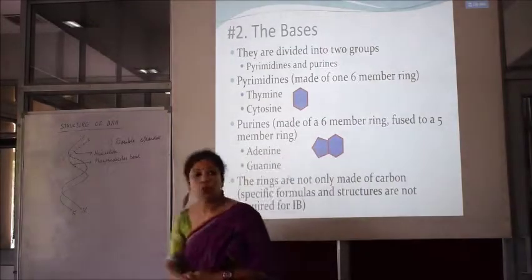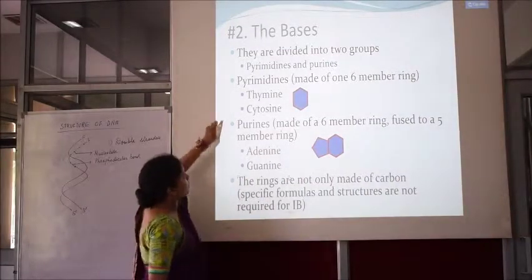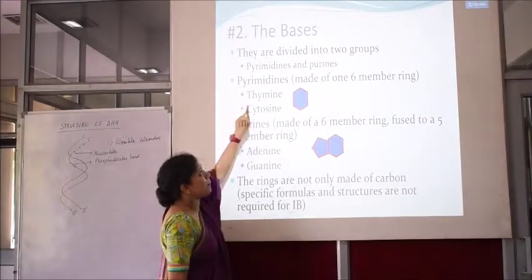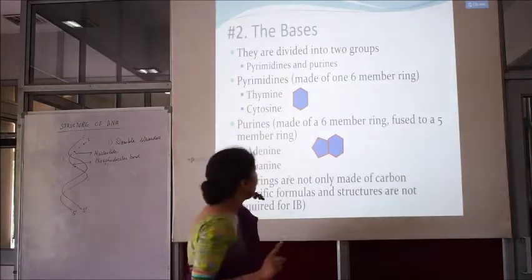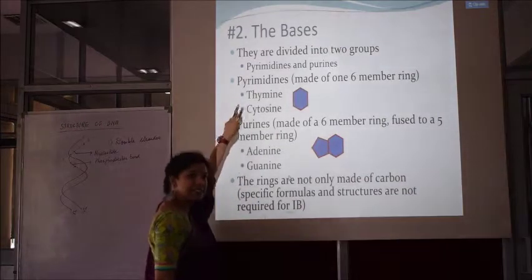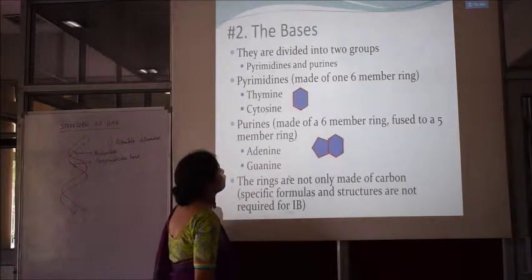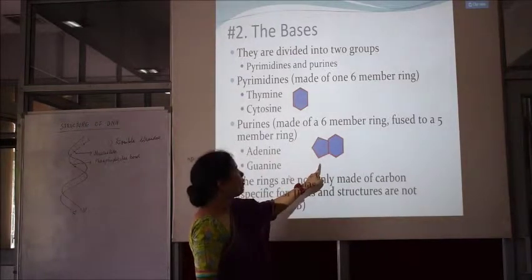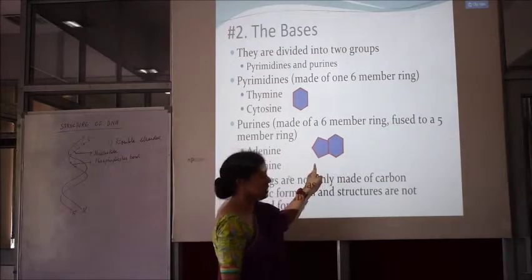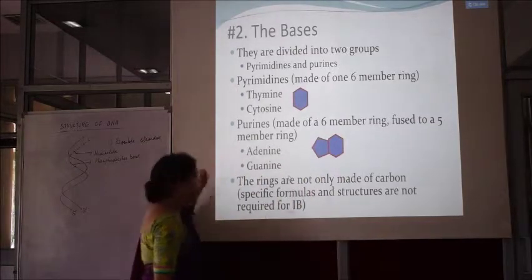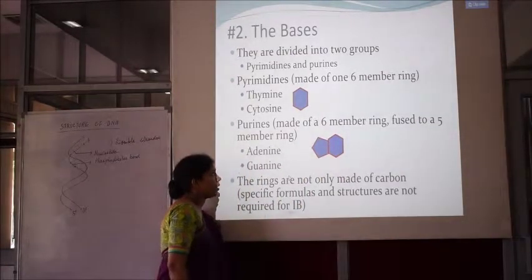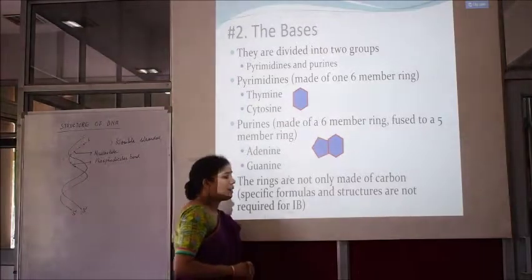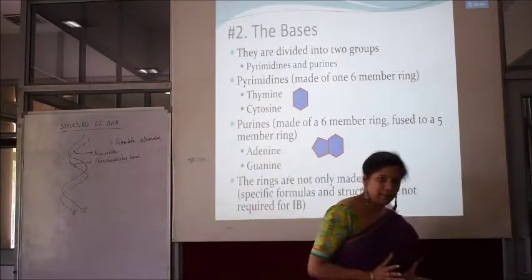The bases are of two major types: pyrimidines and purines. Pyrimidines are made up of one six-membered ring, and there are two types of pyrimidines — thymine and cytosine. Purines are made up of a six-membered ring fused to a five-membered ring, and there are also two types of purines — adenine and guanine. The rings are not only made up of carbon; they have specific formulae and different structures.